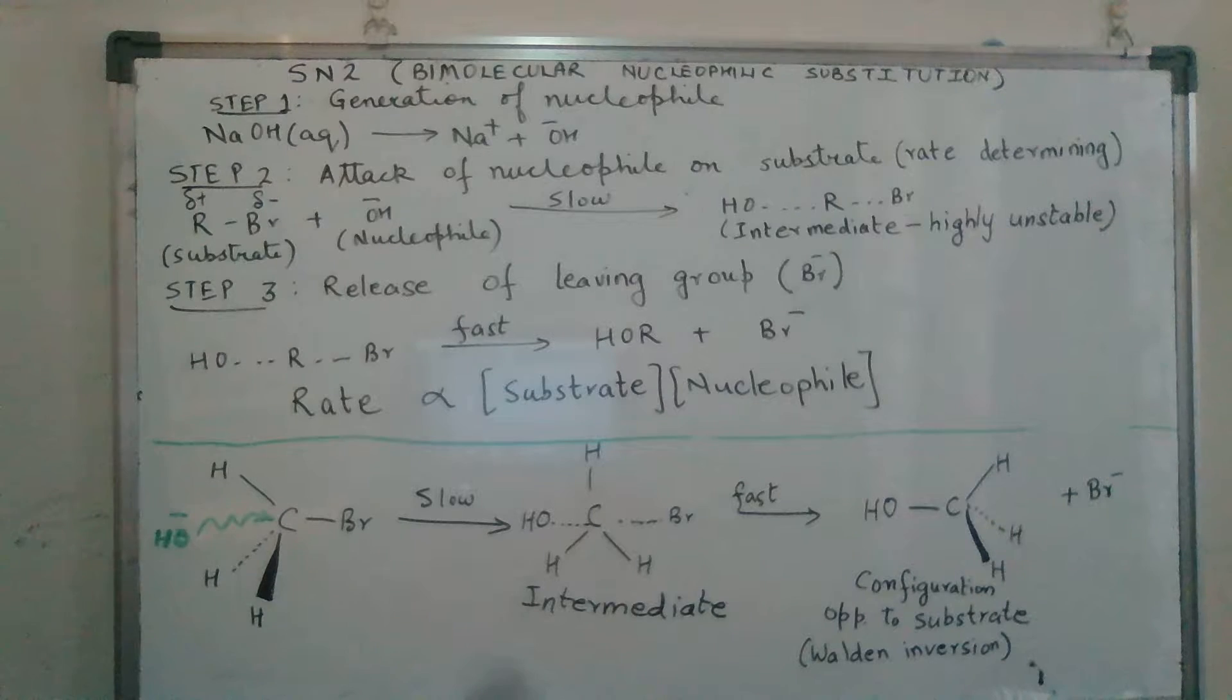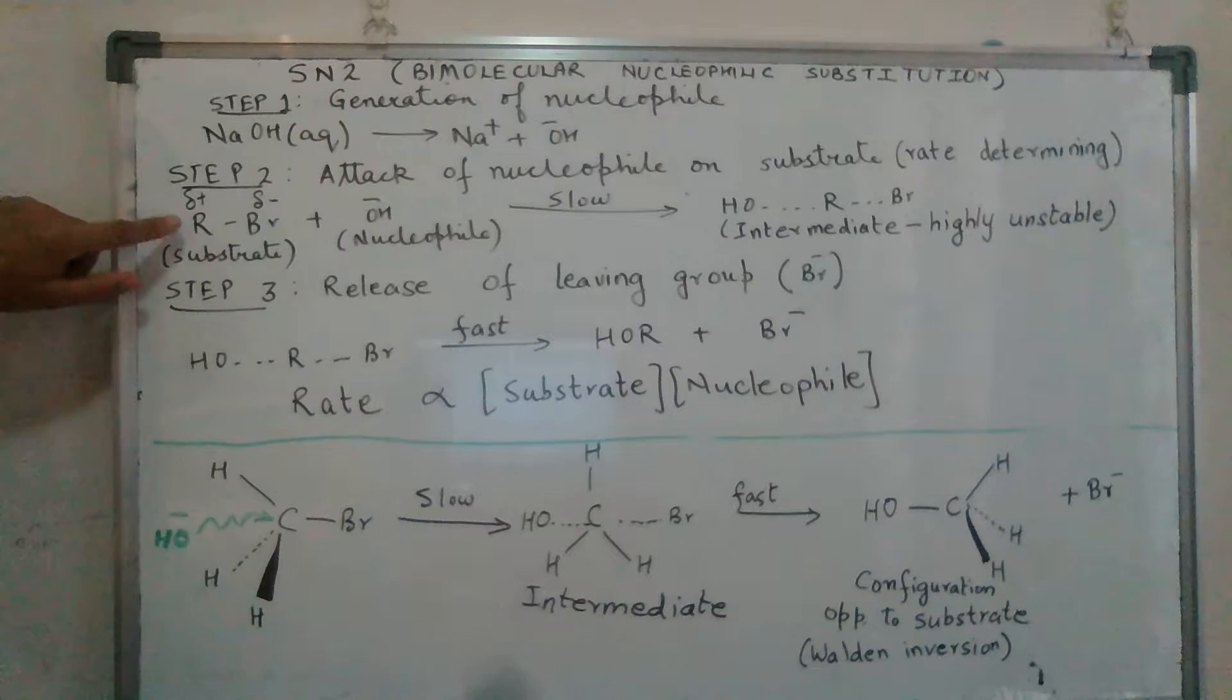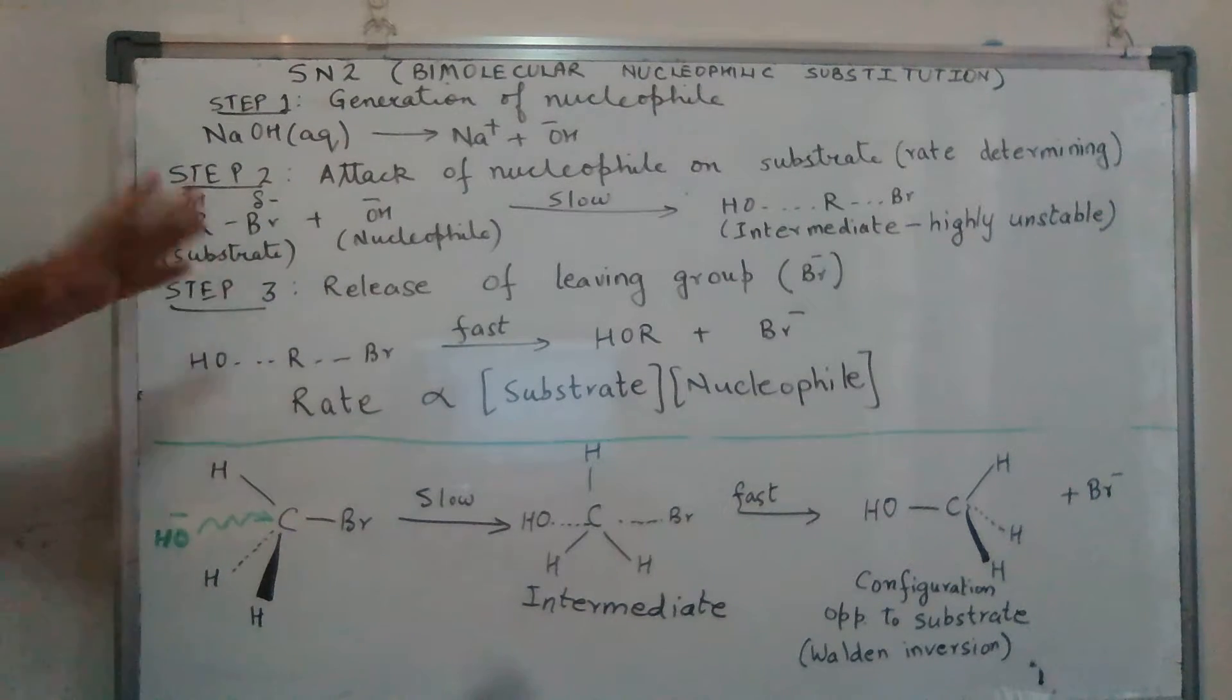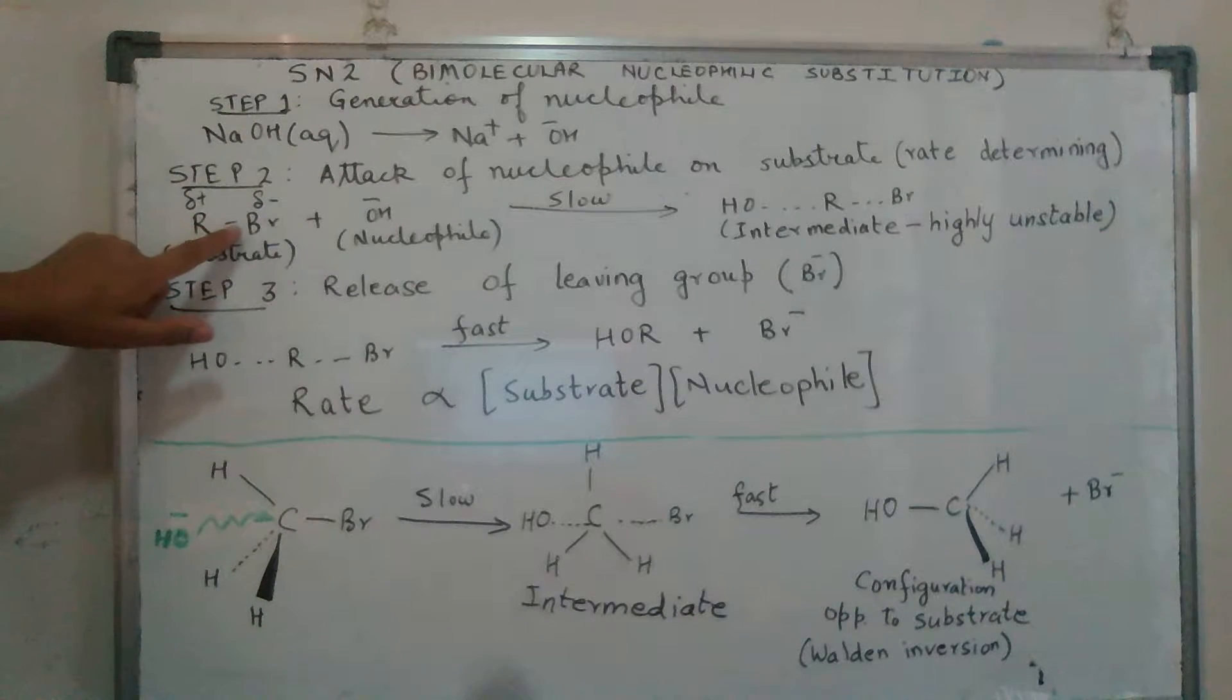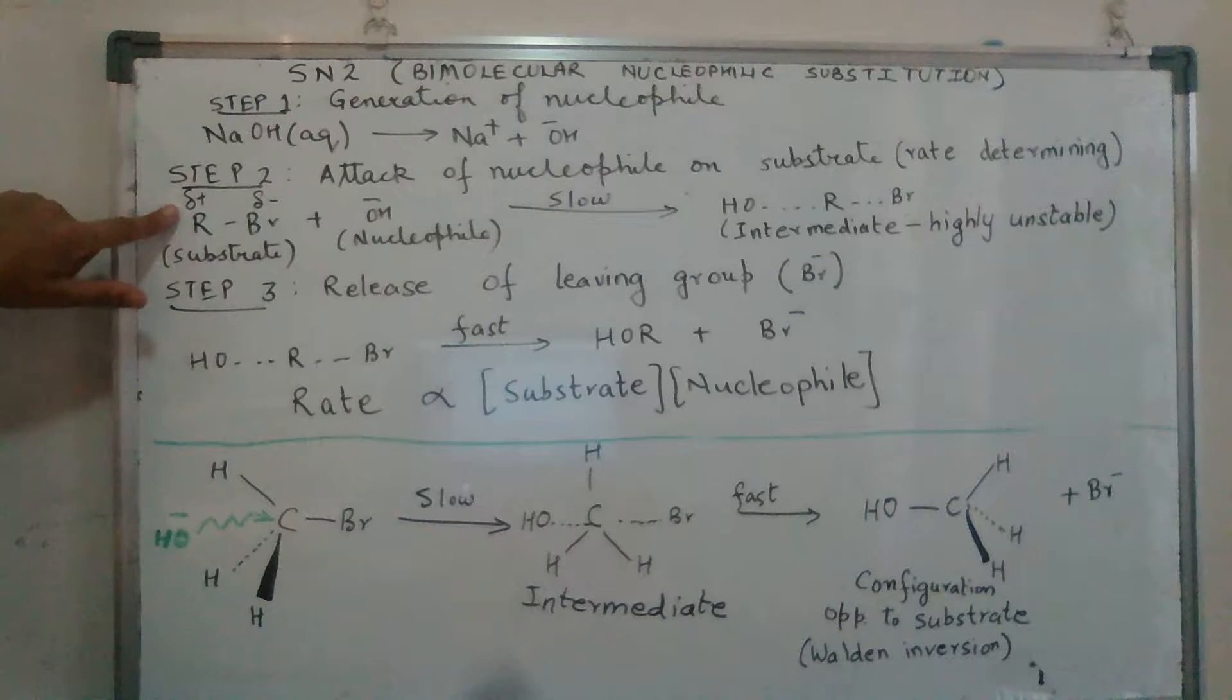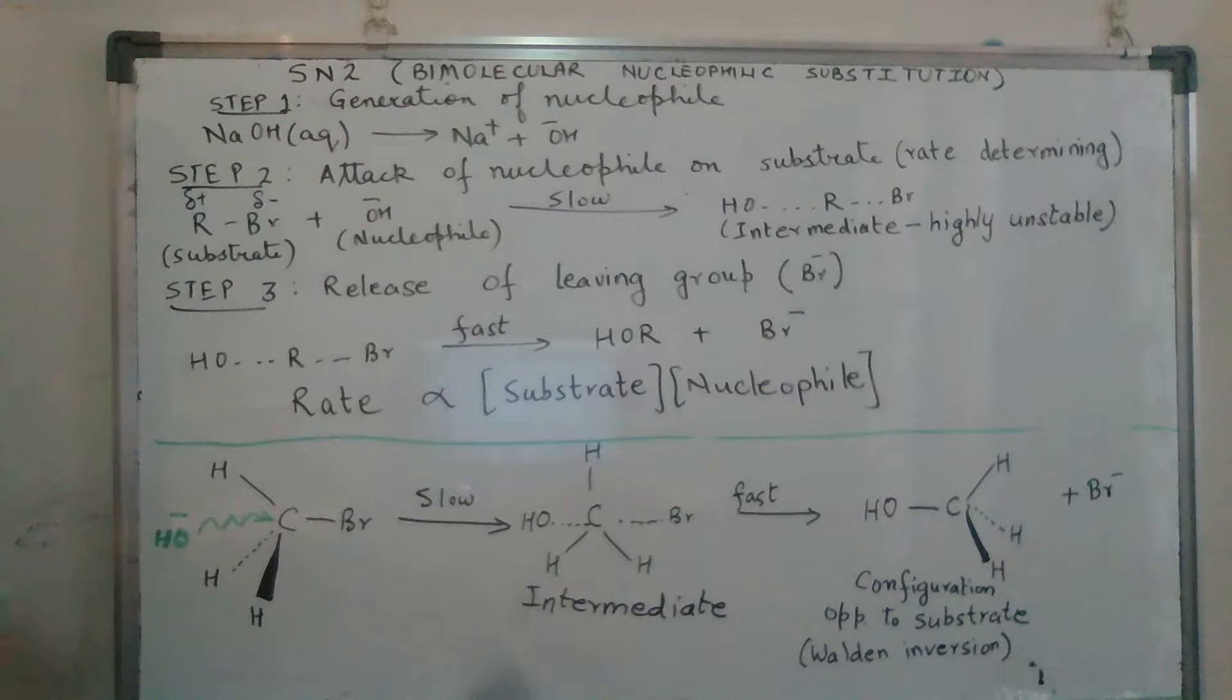Nucleophile means nucleus loving - it will have a negative charge or an electron rich center. Coming to step two, the alkyl halide, that is my substrate over here, gets attacked by the nucleophile. Why will the nucleophile attack the alkyl halide? That's because the halide ion has high electronegativity. It pulls the electron cloud towards itself, leaving the carbon with a slight positive charge, although it will be a slow process.